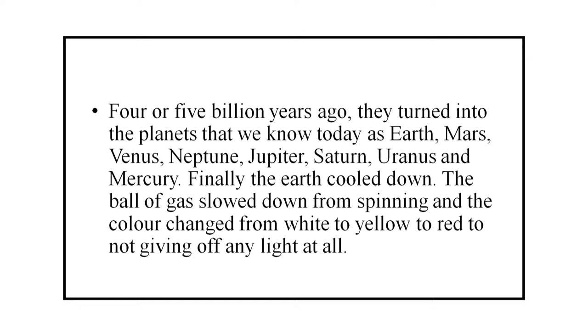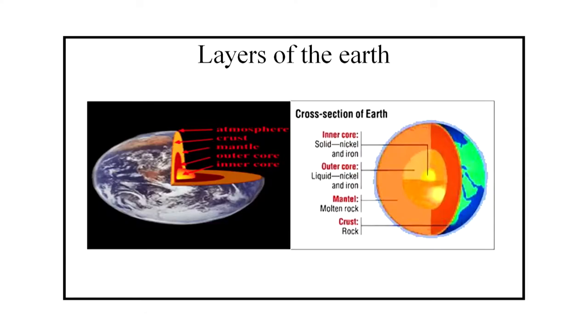Finally, the Earth cooled down. The ball of gas slowed down from spinning, and the color changed from white to yellow to red to not giving off any light at all. The Earth contracted, getting smaller, and the gas changed to liquid as they cooled.